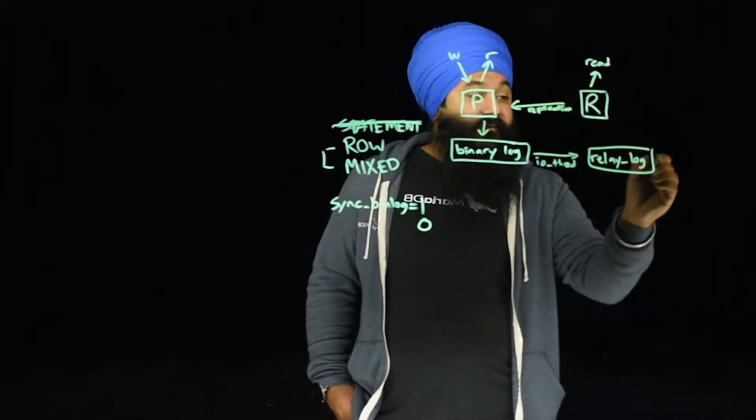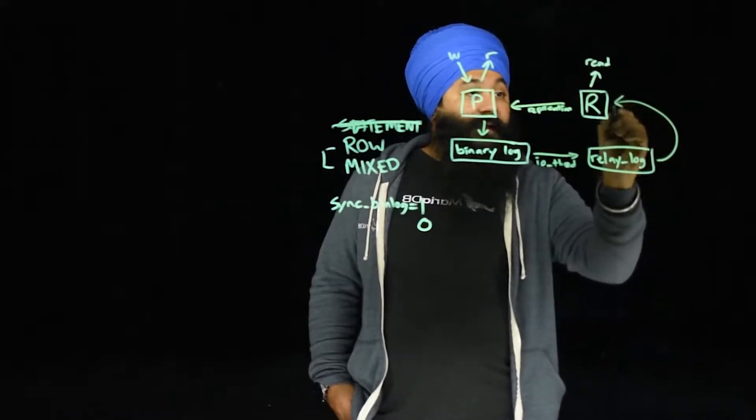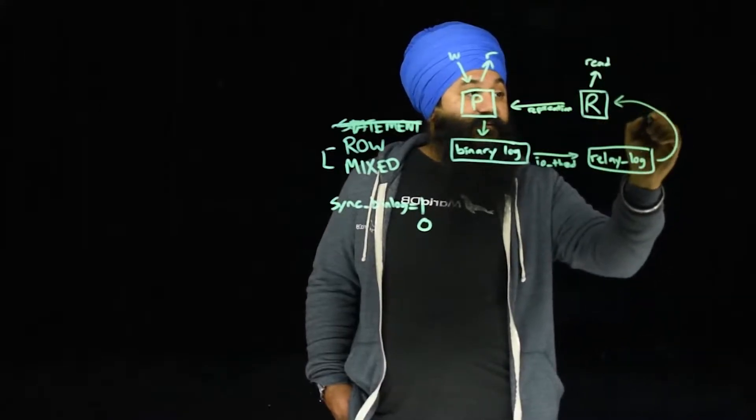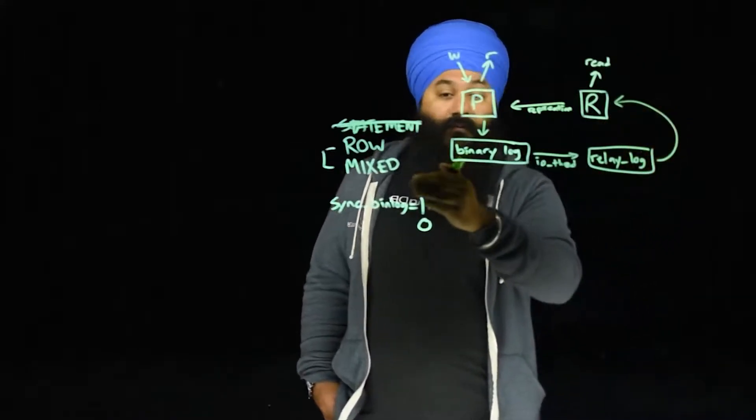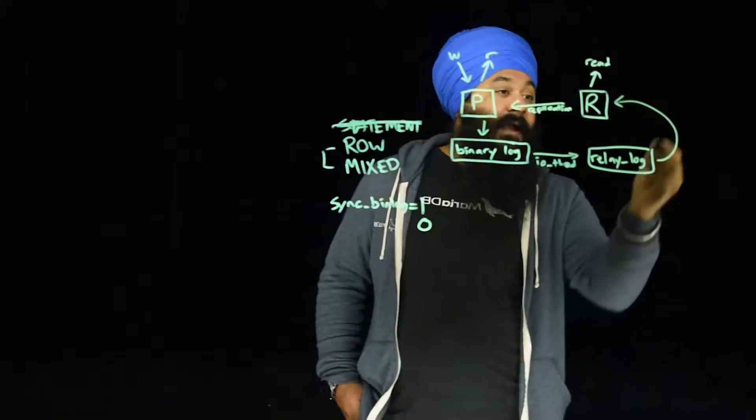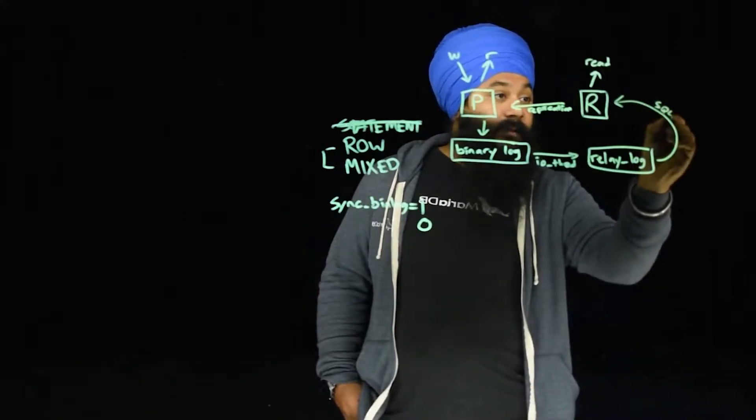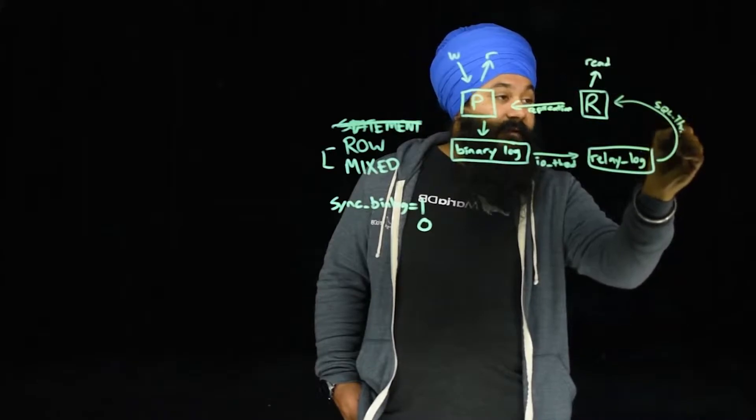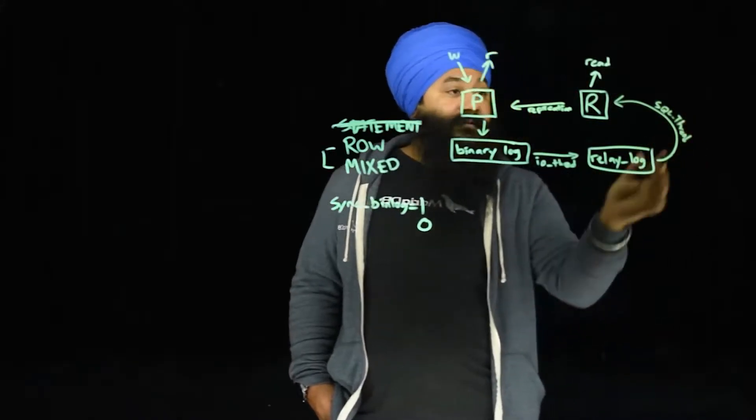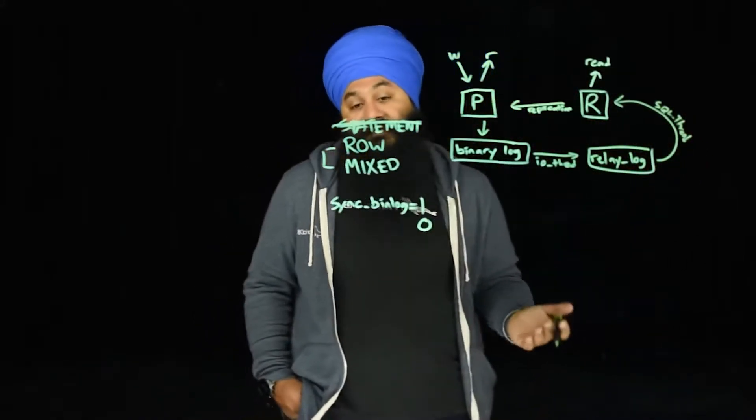What happens next is that relay log is applied to the replica's storage engines via transactions that are either row or mixed or statement-based in what is known as the SQL thread. And that SQL thread will write out all these transactions. By default, it's single threaded,